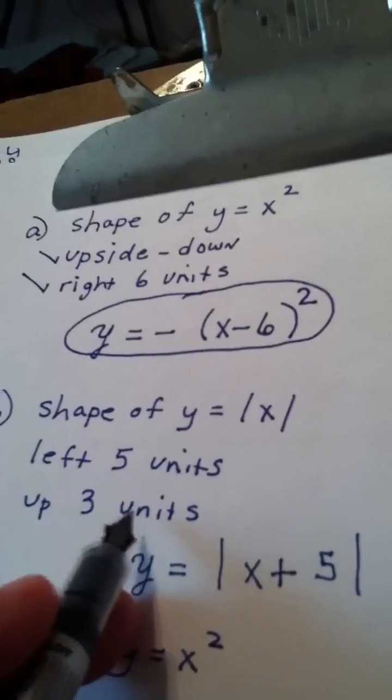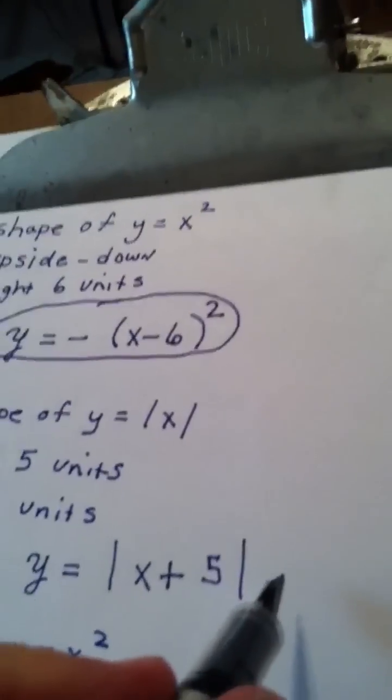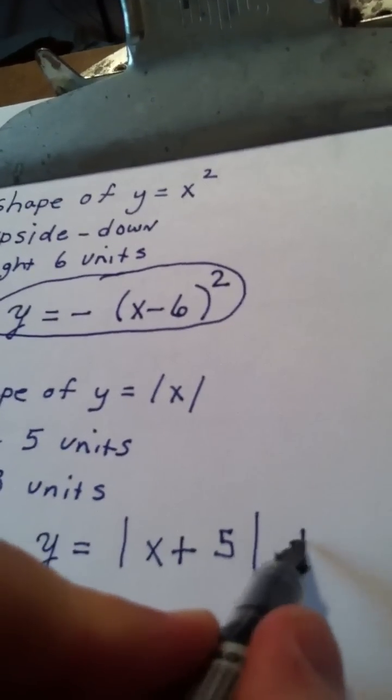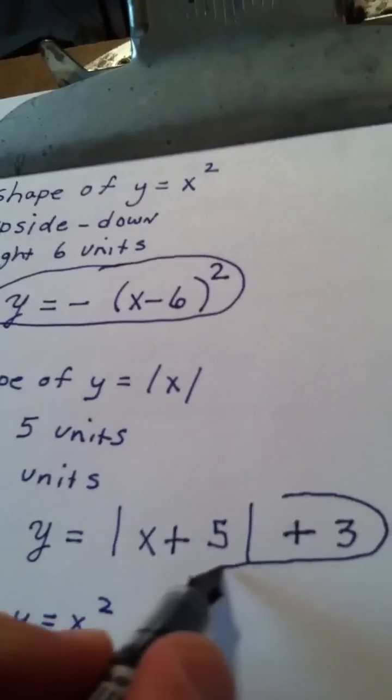And then up three units, up means the y value. The y value always does what it says. So up three means plus three. So that is my answer.